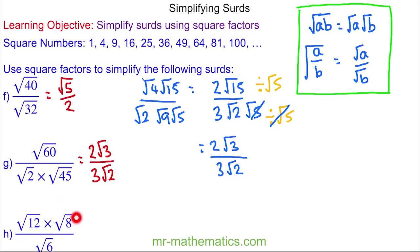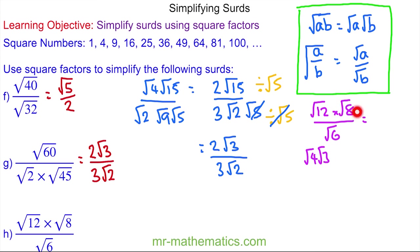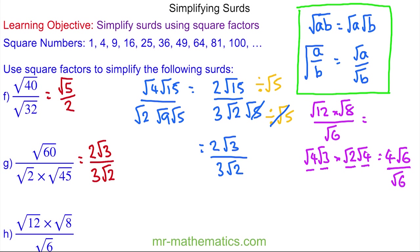For question h, try simplifying by pausing the video. For root 12 we have root 4 times root 3, and for the square root of 8 we have root 2 times root 4. The square root of 4 is 2 in both cases, so root 4 times root 4 gives 4, and root 3 times root 2 gives root 6. The denominator is already root 6, so dividing by root 6 cancels, and the expression simplifies to 4. Thank you for watching — I hope you found that useful. Take care.